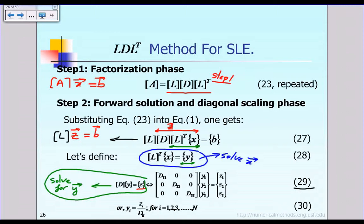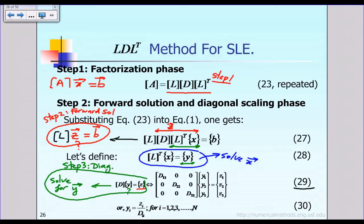Step two is called the forward solution step, in order to solve for the unknown vector Z. After that, step three solves for the unknown vector Y, and this phase is called diagonal scaling. Then step four, which we call the backward solution, completes the procedure.